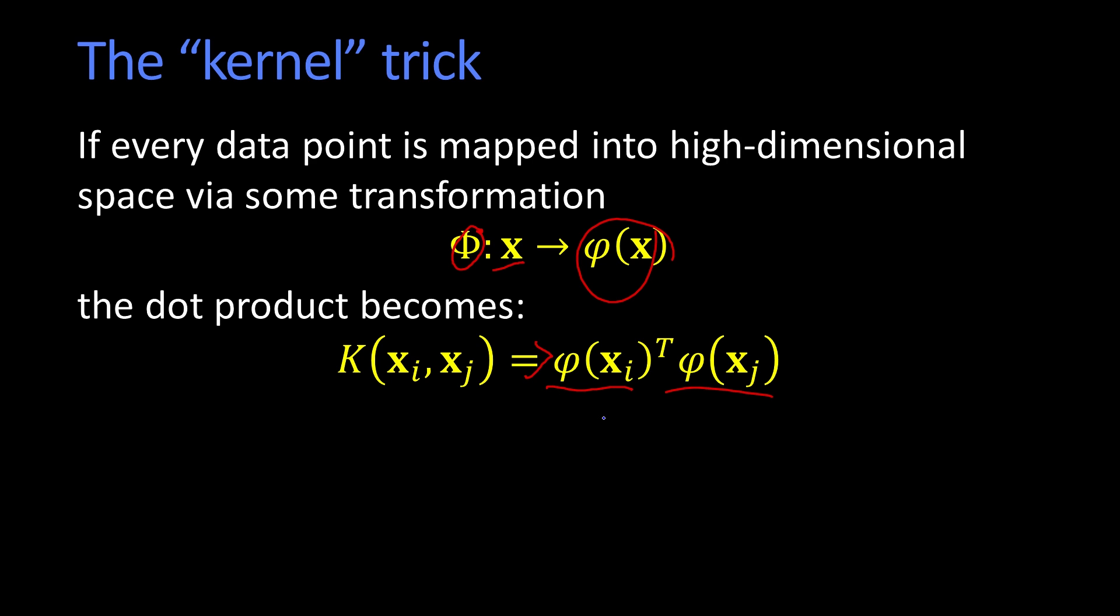That's what's written right there. And in fact, what I'm actually going to do is I'm just going to redefine k, instead of just being the dot product of xi and xj, I'm going to have a new k, which is just this dot product of the higher dimensional space.